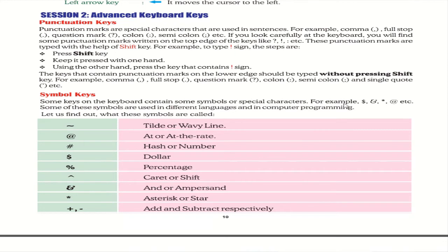Symbol keys on the keyboard contain symbols or special characters, for example dollar, asterisk, at sign, and others used in different languages and computing. Here are their names: tilde (~), at or at-the-rate (@), hash (#), dollar ($), percentage (%), caret (^), ampersand (&), asterisk or star (*), plus (+), and minus (-).